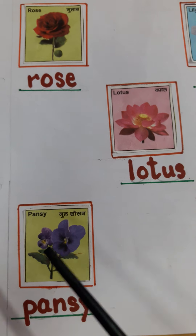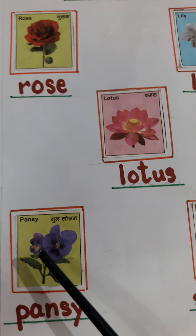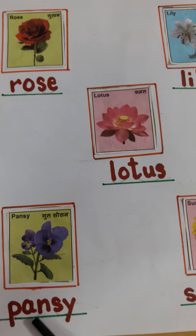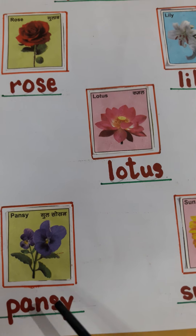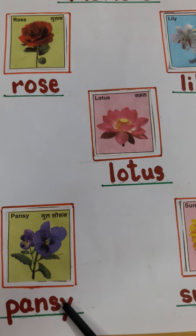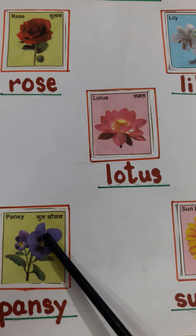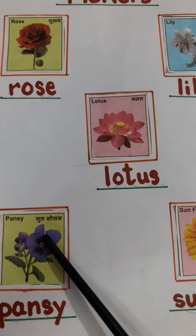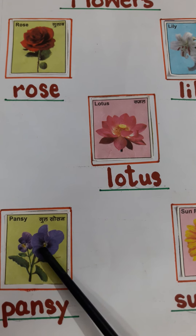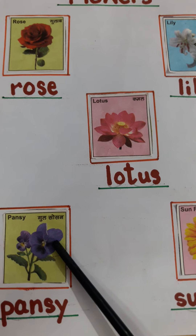Uske baad kya hai? Pansy. P-A-N-S-Y. Pansy. Pansy ka color dekha hai? Blueish color ka hota hai, ye halka purple. Ye bhi ek sundar sa flower hai.